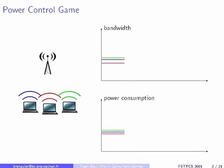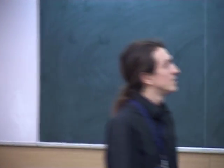I will first motivate the study of Nash Equilibria for computer scientists by giving a small example you can relate to. In this room, we have an antenna over there, and there are some laptops that are open and communicating with this antenna wirelessly.